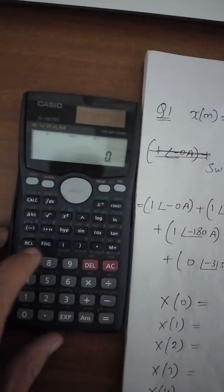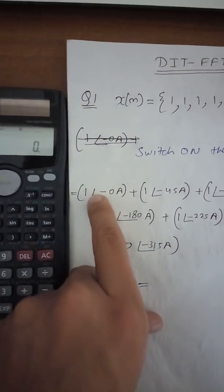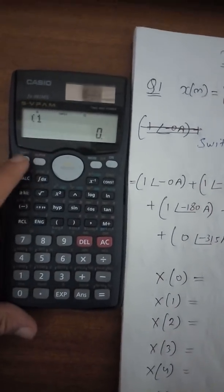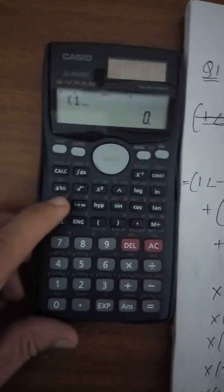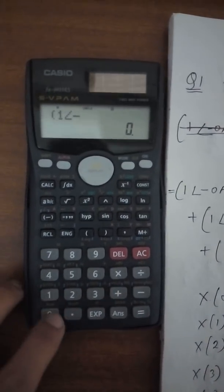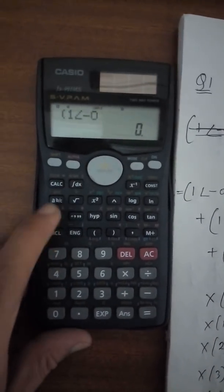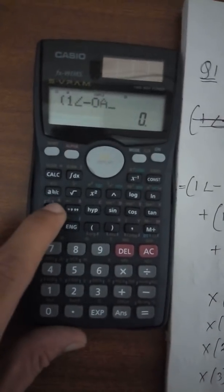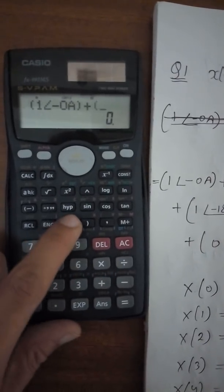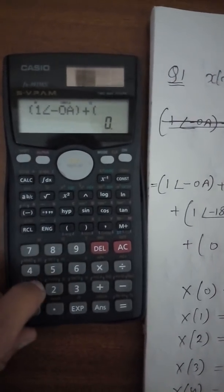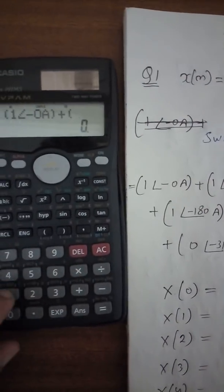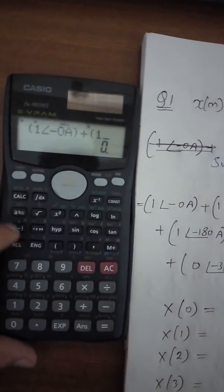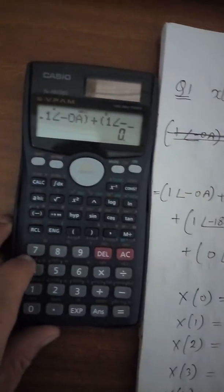Now we are going to feed the sequence into the calculator with complex mode on. Open the bracket, enter one, press Shift, then the angle button, press minus 0, then Alpha A, then press plus to add the next term: one angle minus 45, press Shift, then minus 45, Alpha A.